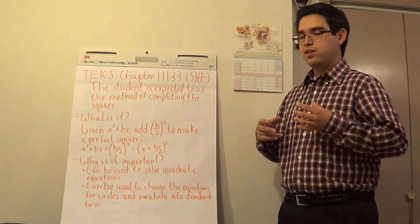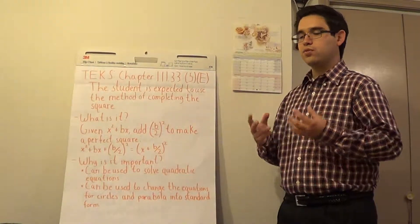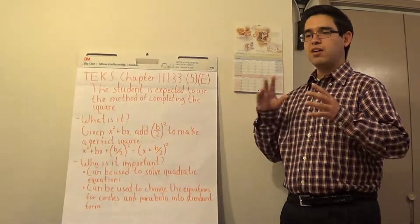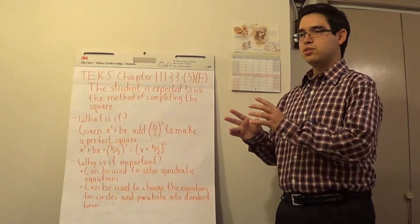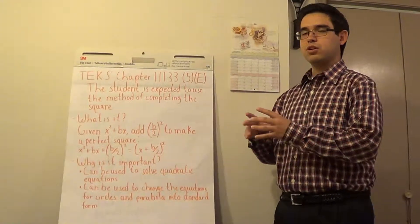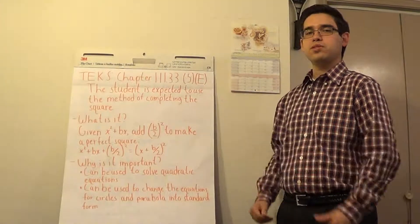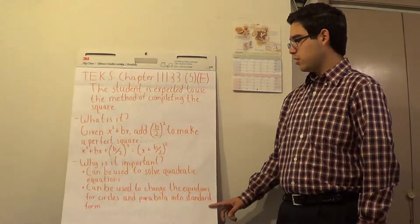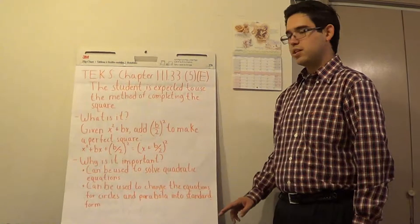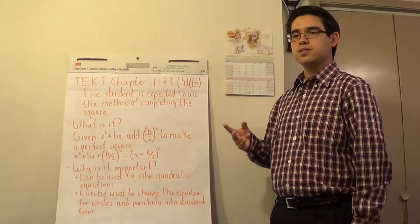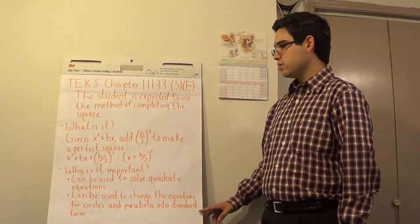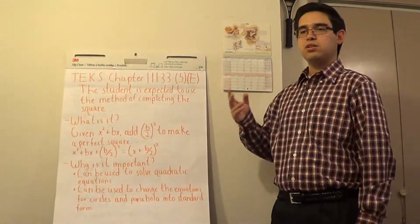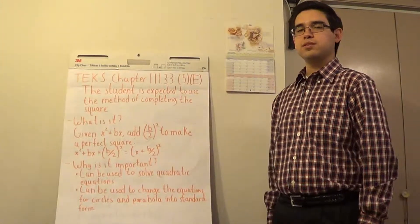Oftentimes you'll be given the equations for these conic sections in such a way that you don't really have much of an idea as to how to graph it out or some of the properties for these graphs. In the case of a parabola, changing the equation to standard form will give you its vertex. In the case for circles, changing it to standard form will give you the center of the circle as well as its radius.